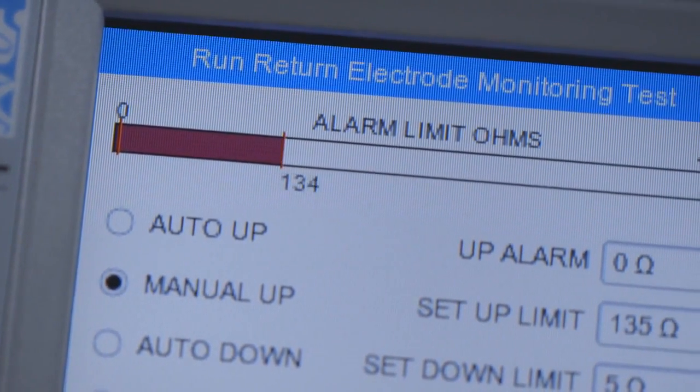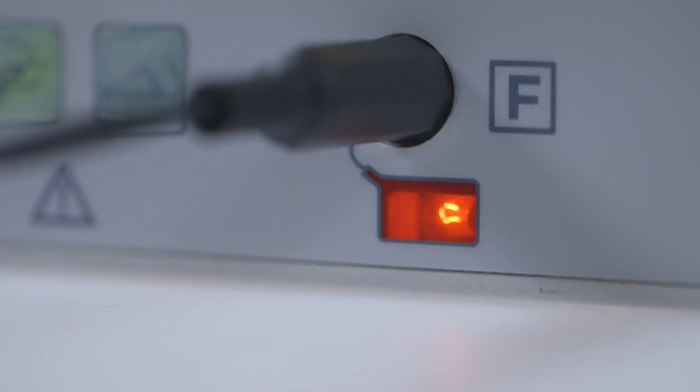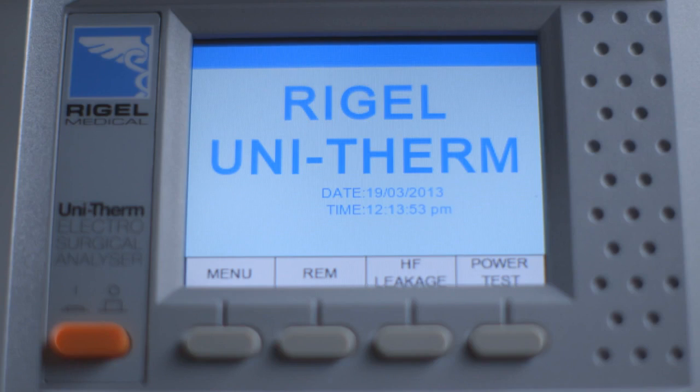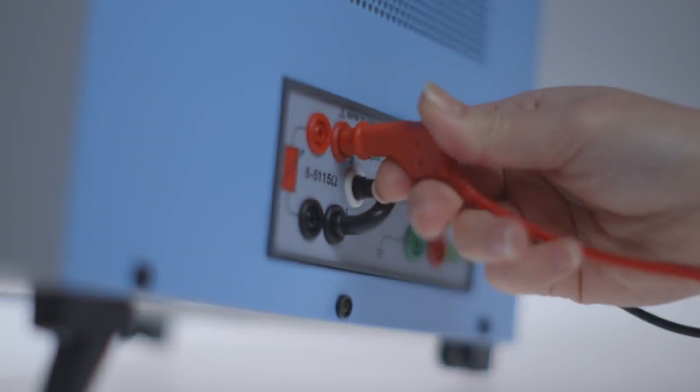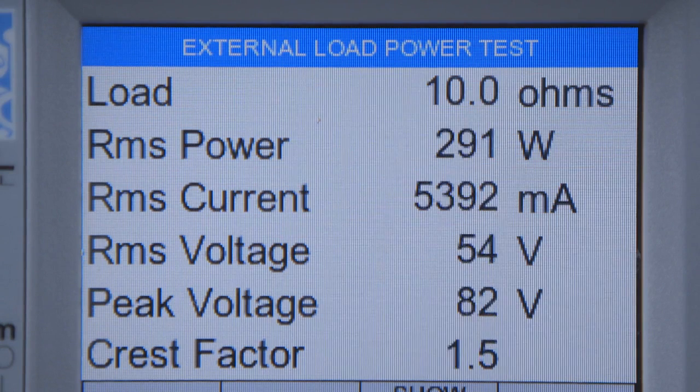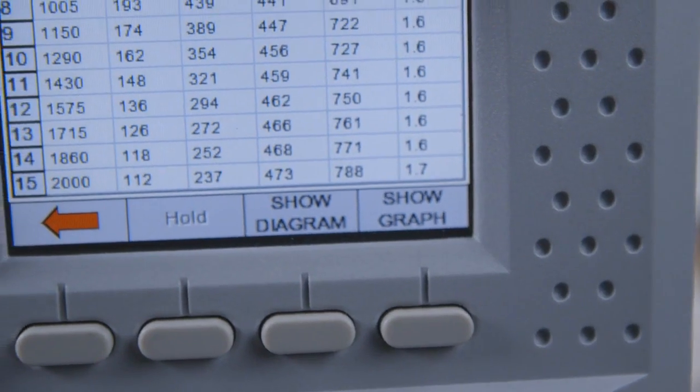This enables the testing of modern contact quality monitoring systems that are triggered by relative changes in resistance. With current measurements of up to 8 amps RMS and featuring an extremely accurate load bank, the UniTherm provides unmatched accuracy even for testing high current vessel sealing treatment functions.